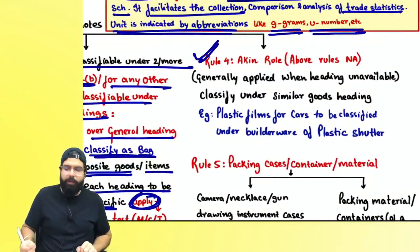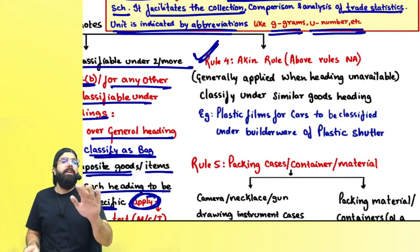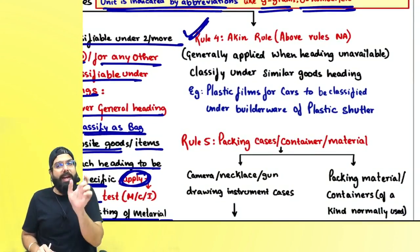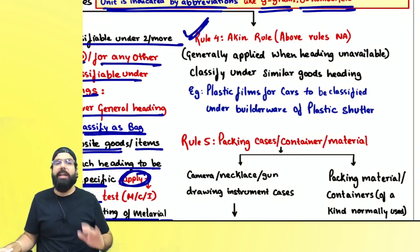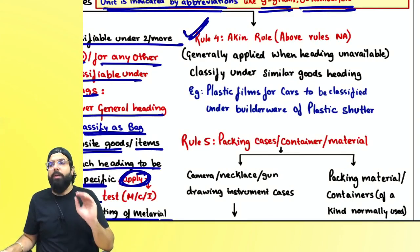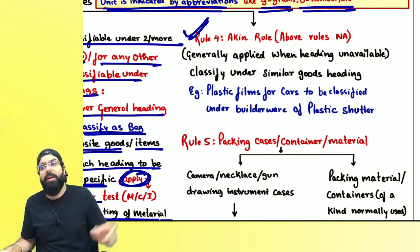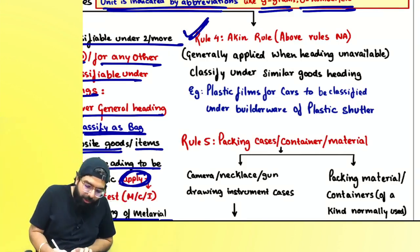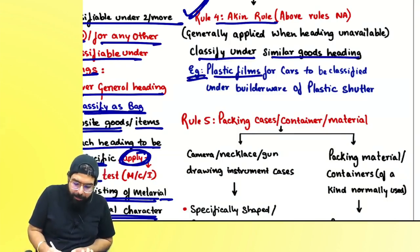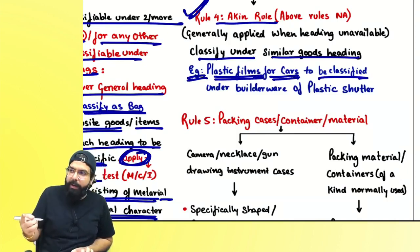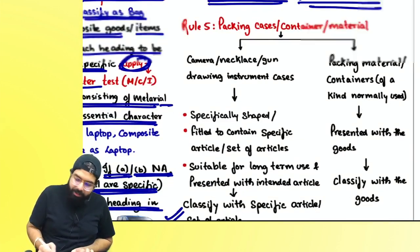Then comes rule number four — the akin rule. If all other rules are not applicable and the heading for an imported item simply does not exist, then that item can be classified under a similar goods' heading. That is what the akin rule says: classify under similar goods' heading. For example, plastic flames for a car can be classified under builder ware of plastic shutter.